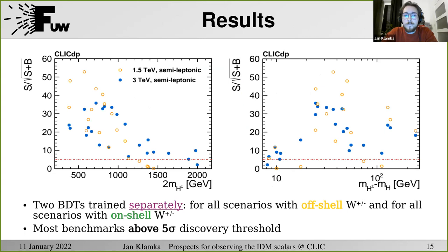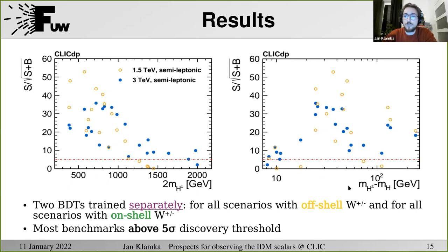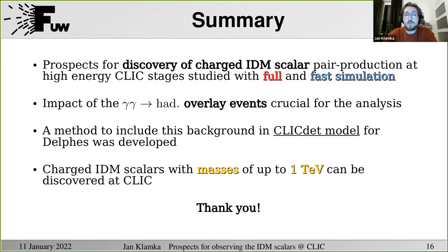The full set of results based on Delphes with overlay events included shows that the boosted decision trees were trained on two datasets separately: one composed of scenarios with off-shell W boson production and another with real Ws. For the vast majority of benchmark scenarios considered, we could observe the IDM scalars. The scenarios with small mass splittings are the most challenging due to the overlay contribution.